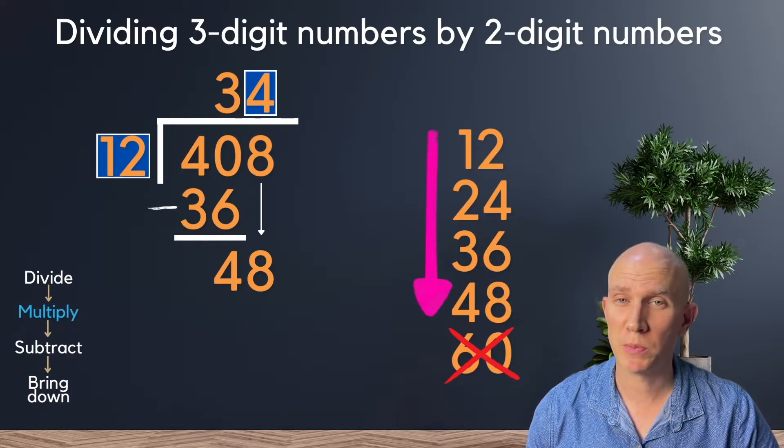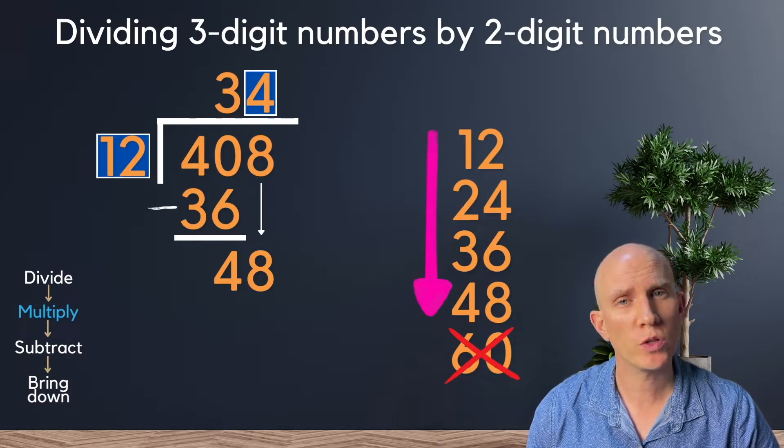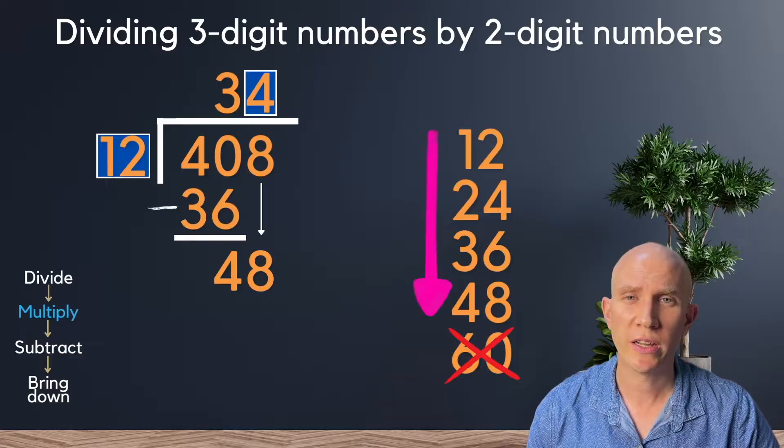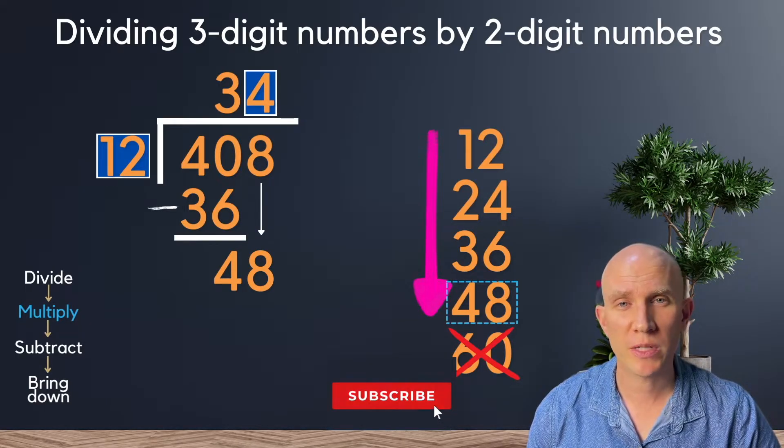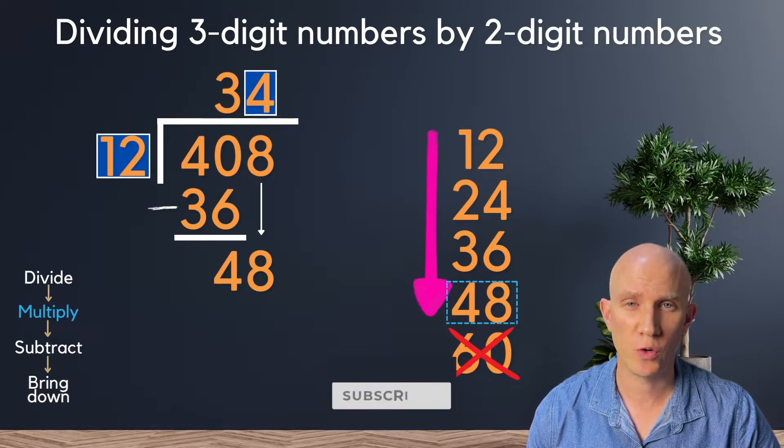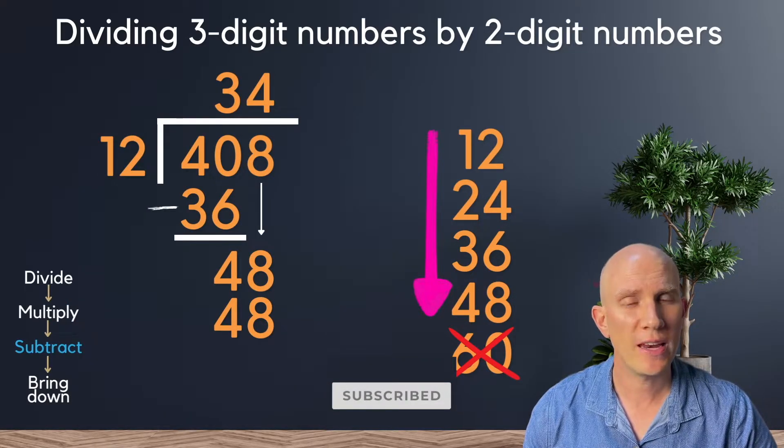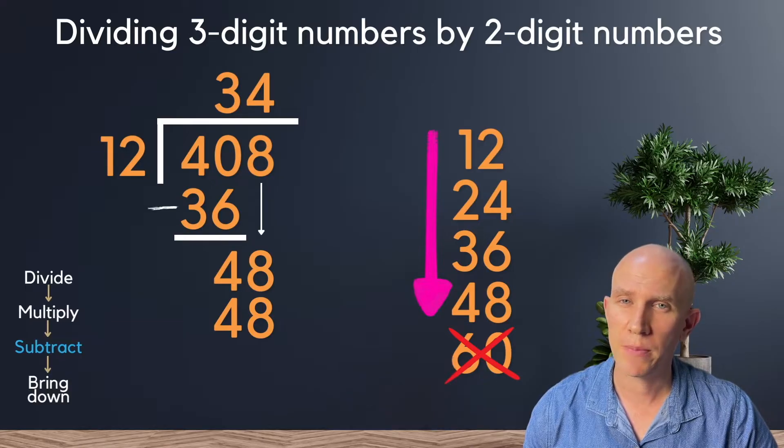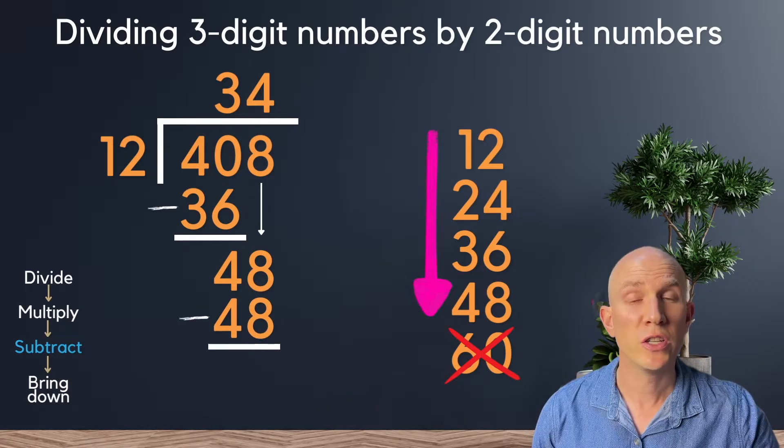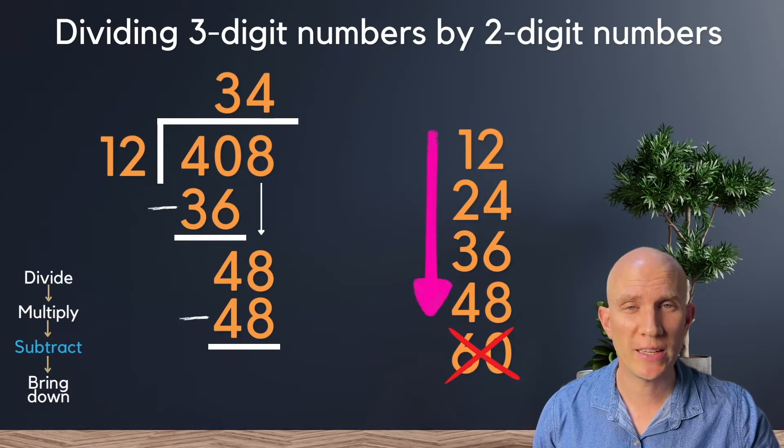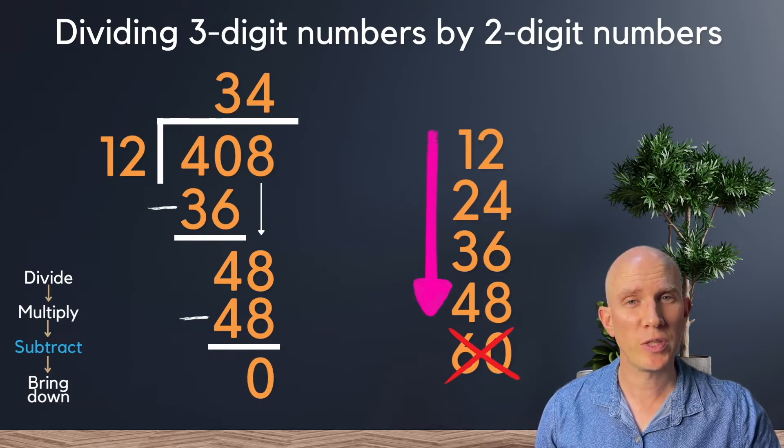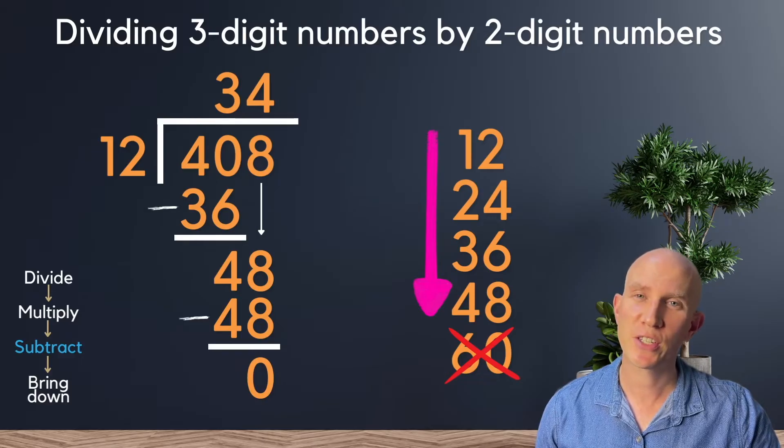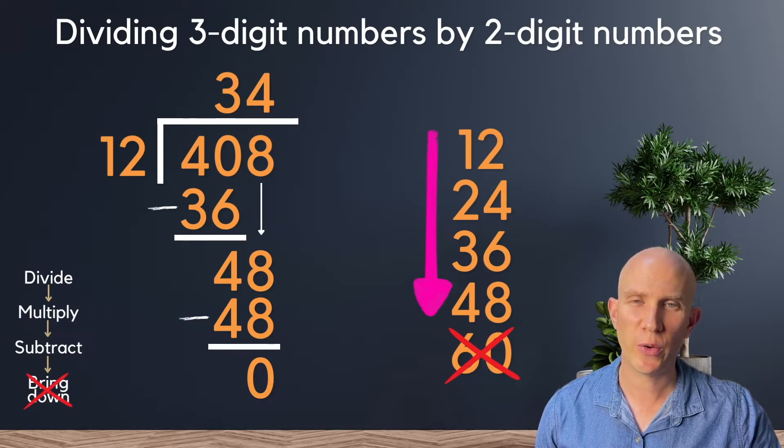Next up is multiplication, where we say 4 times 12 is what? And once again, it's done for you. So here you just need to look at your times tables, and the answer is 48. So we write that in. And we move on to the next step, which is subtraction. So we take 48 minus 48, and the answer there is zero. And because there are no more digits to bring down, we can stop there.